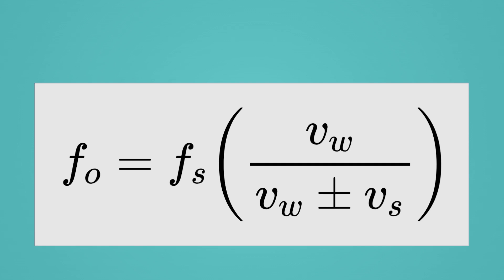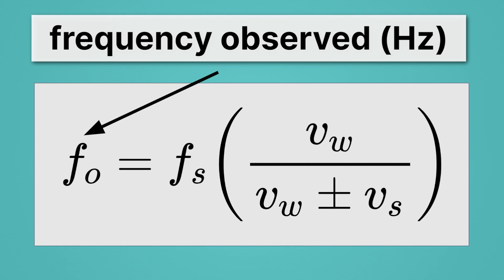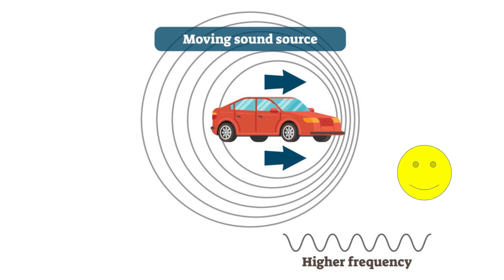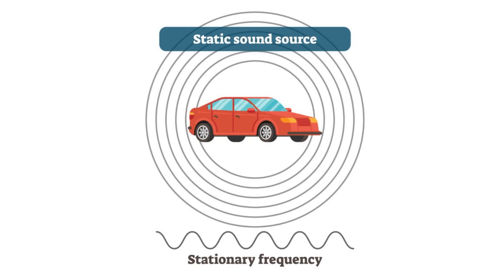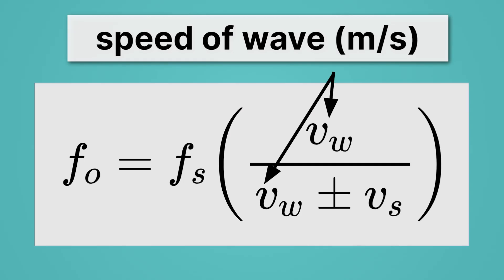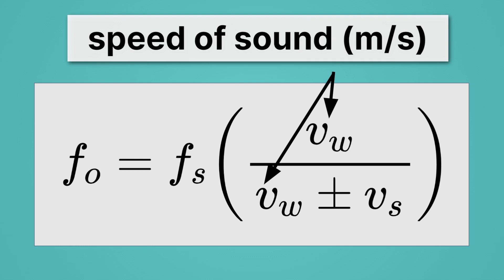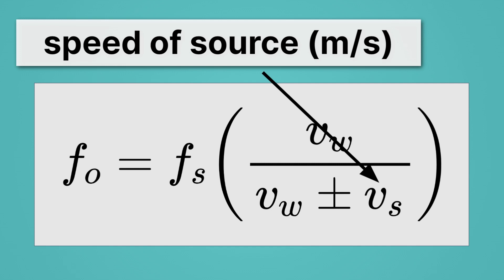Let's talk about what each part of this equation means. Fo — the F stands for frequency, specifically the frequency observed. The Doppler shift only really occurs for the observer, so Fo is the frequency that our smiley-faced man outside the moving car would observe. Meanwhile, Fs is the frequency of the sound — that would be the frequency of your engine sitting still, or the frequency of the engine for the person inside the car. W stands for the speed of the wave; in this case, we can call it the speed of sound, measured in meters per second. And Vs is the speed of the source — how fast your car is moving, or how fast the butterfly is moving for the bat.